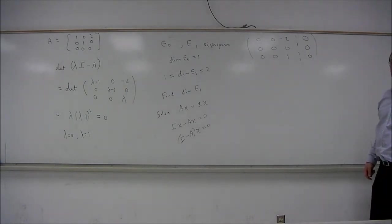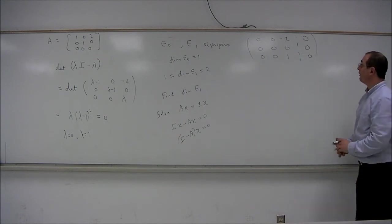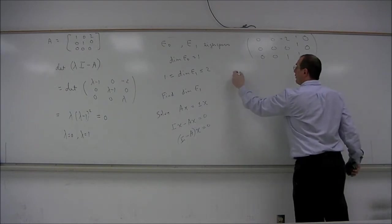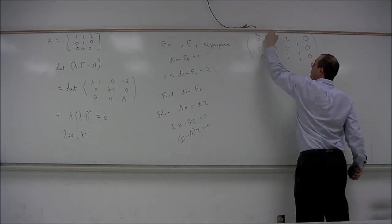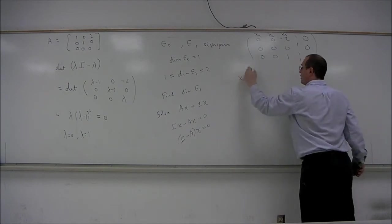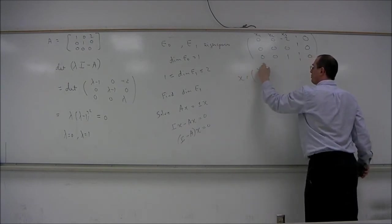So the solutions to this system, X1 and X2 would be free variables. Here I'm thinking of this as the X1 column, the X2 column, and the X3 column. Our vector X is the vector X1, X2, X3.